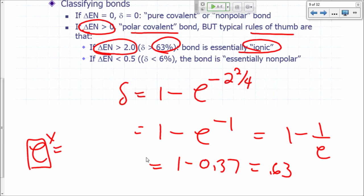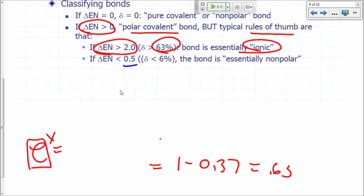Now when the electronegativity is less than 0.5, you'll find that your partial charge would be less than 6%, the transfer of electrons between the two atoms is less than 6%. We say that even though, strictly speaking, the bond is polar covalent, it is still polar covalent, we say that because that difference is so small, we say that the bond is essentially nonpolar.